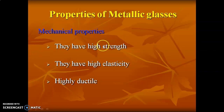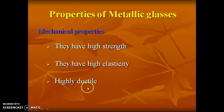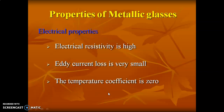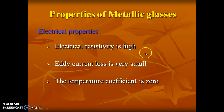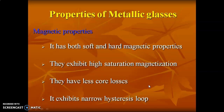Mechanical property: metallic glasses have high strain elasticity and high ductility — meaning the material can be made into wire form. Electrical property: they have very high electrical resistivity, very small eddy current loss, and a temperature coefficient of zero.